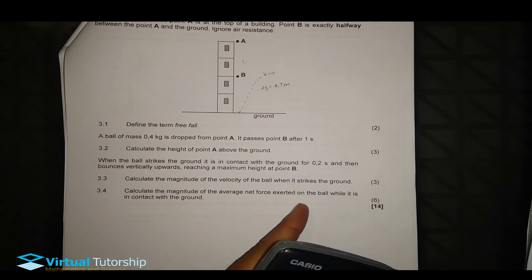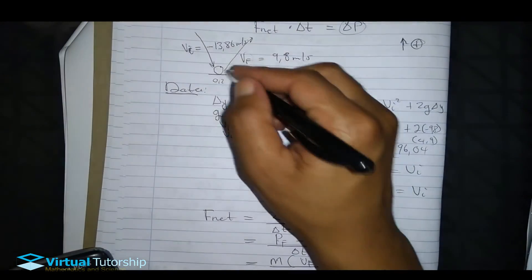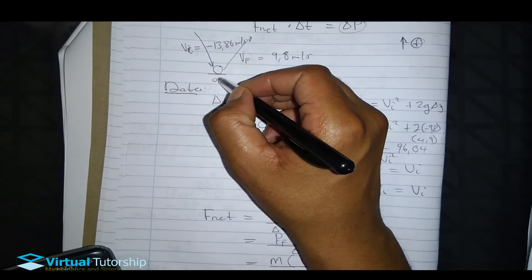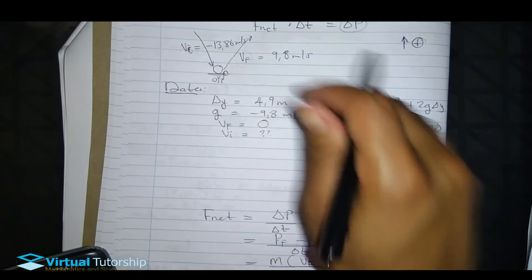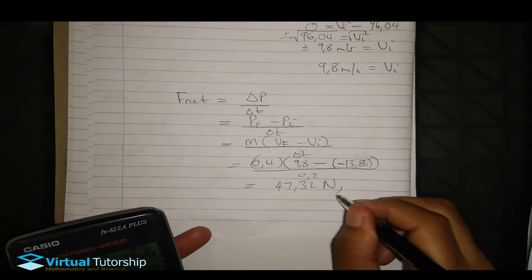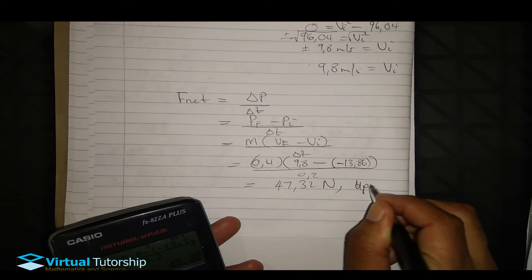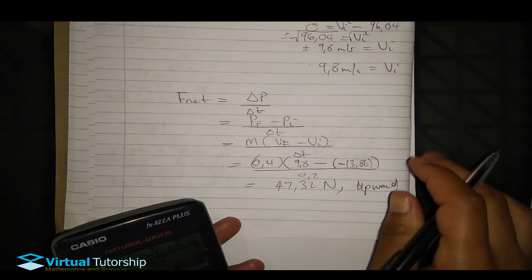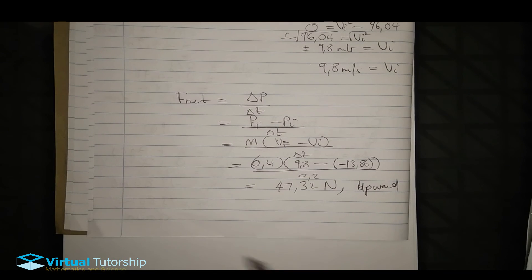The magnitude of the net force exerted on the ball while it is in contact with the ground is 47.32 N. The direction is upward, because the ground exerts an upward force on the ball — equal and opposite to the ball's downward force on the ground (Newton's third law).